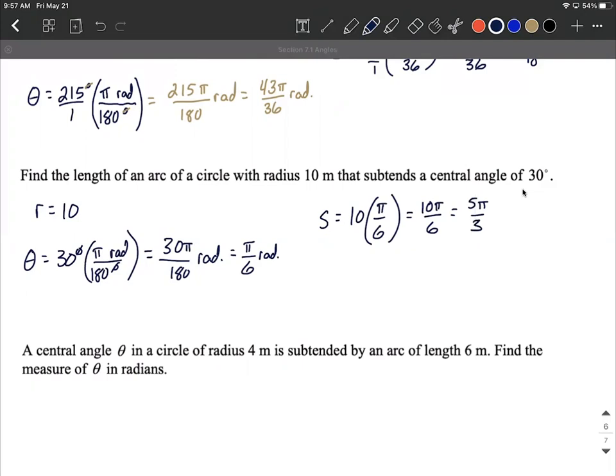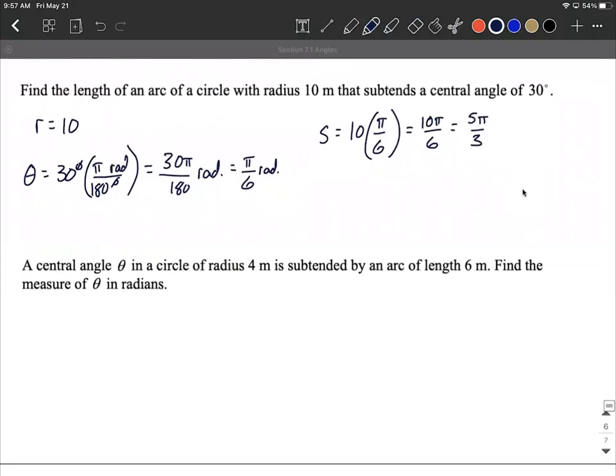One more of these. Let's figure out the central angle theta in a circle of radius 4 meters subtended by an arc length of 6 meters. We're going to find the measure of theta in radians. In this case, we don't know theta. We're given the radius as 4 meters and the arc length s as 6 meters.